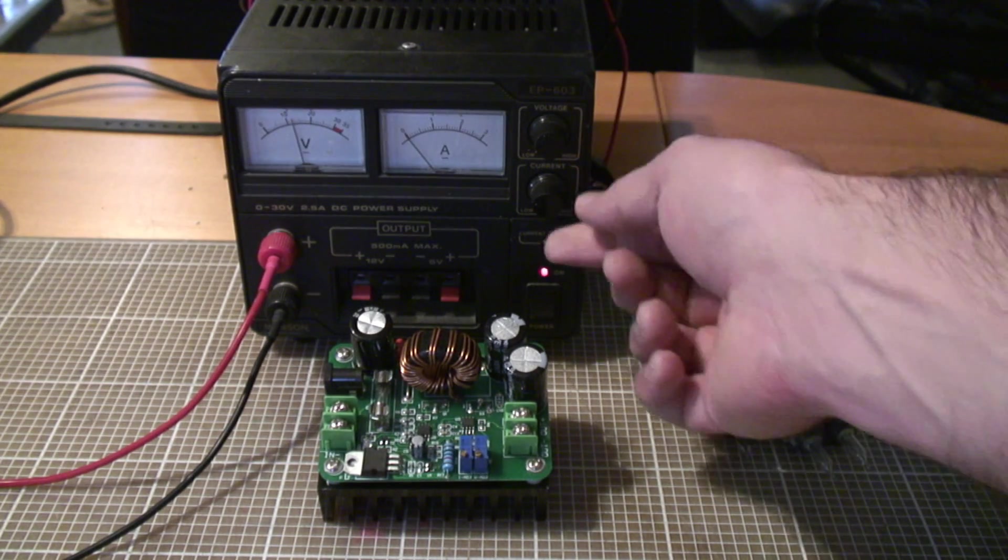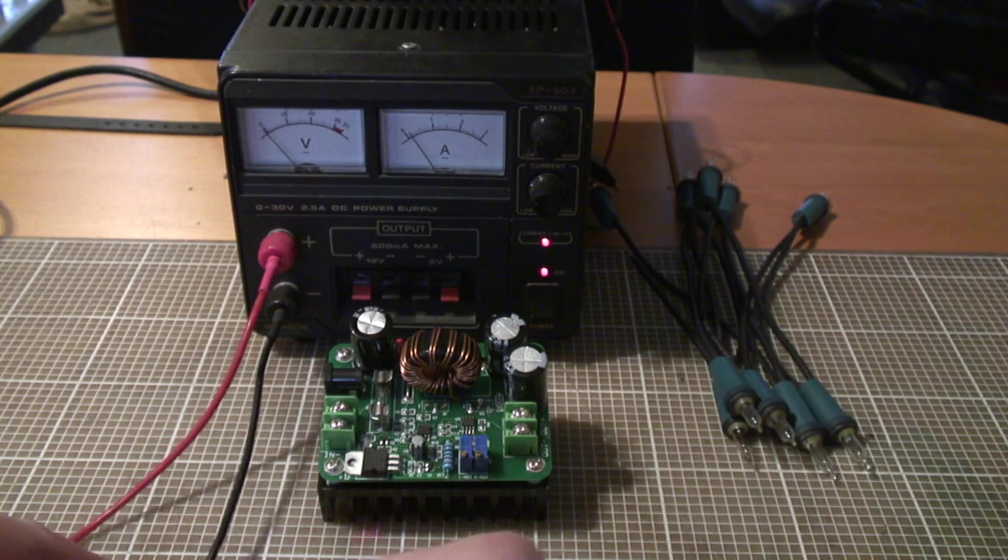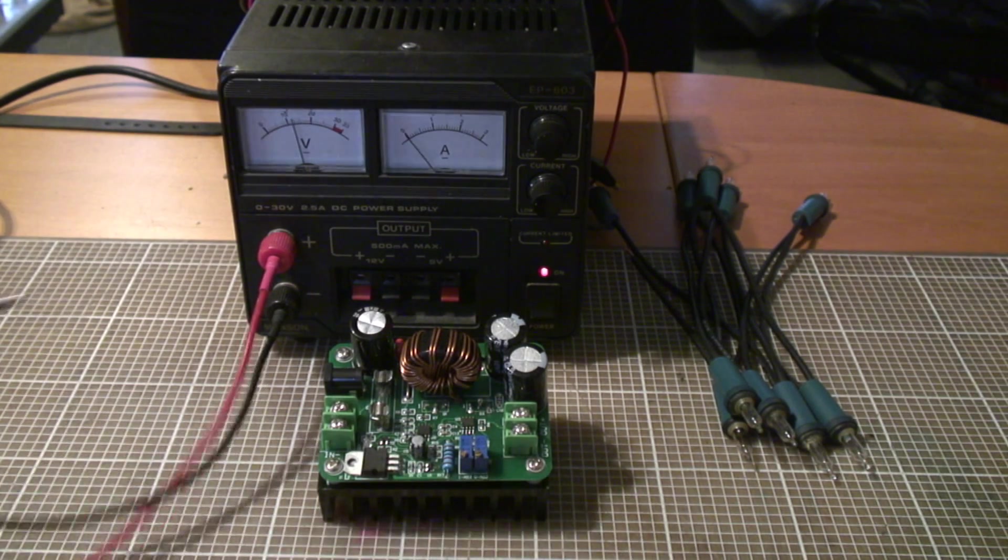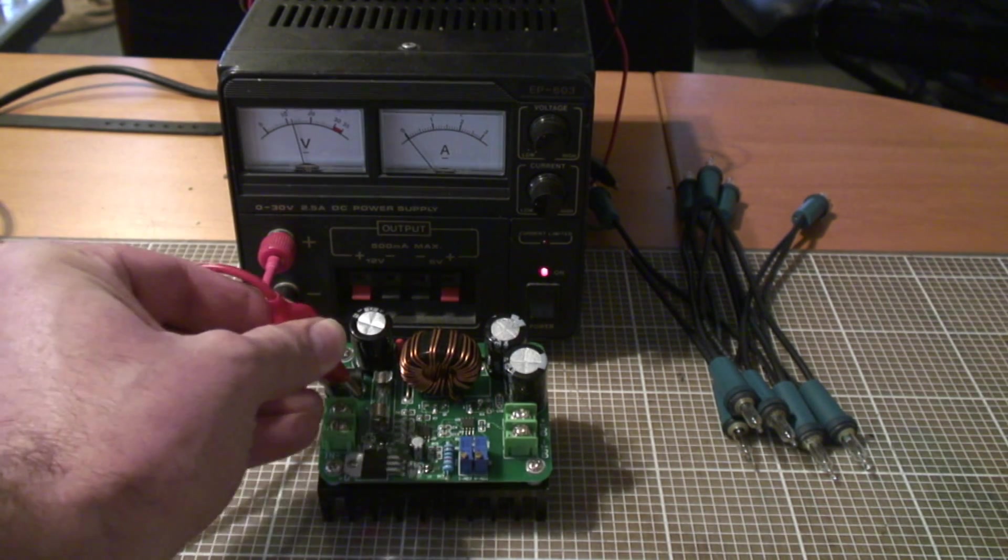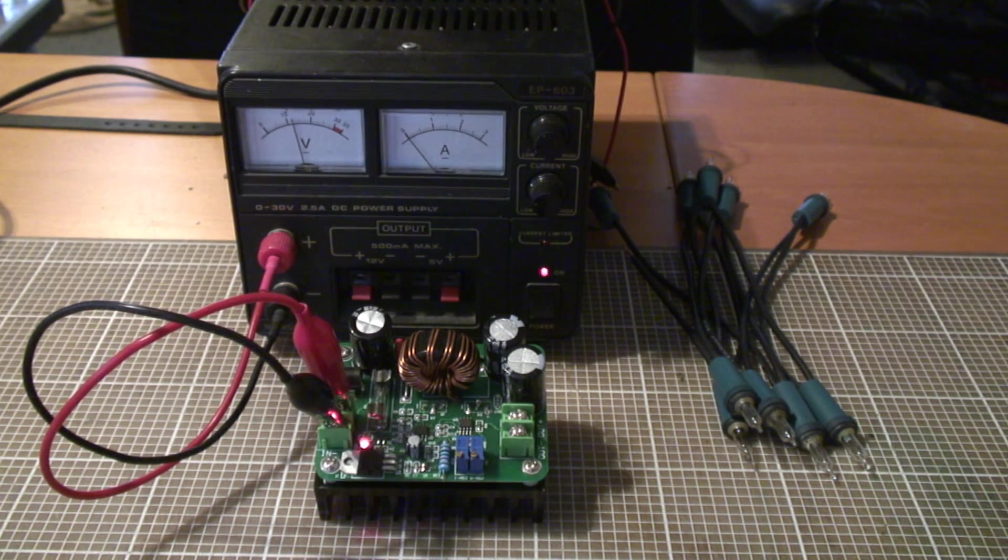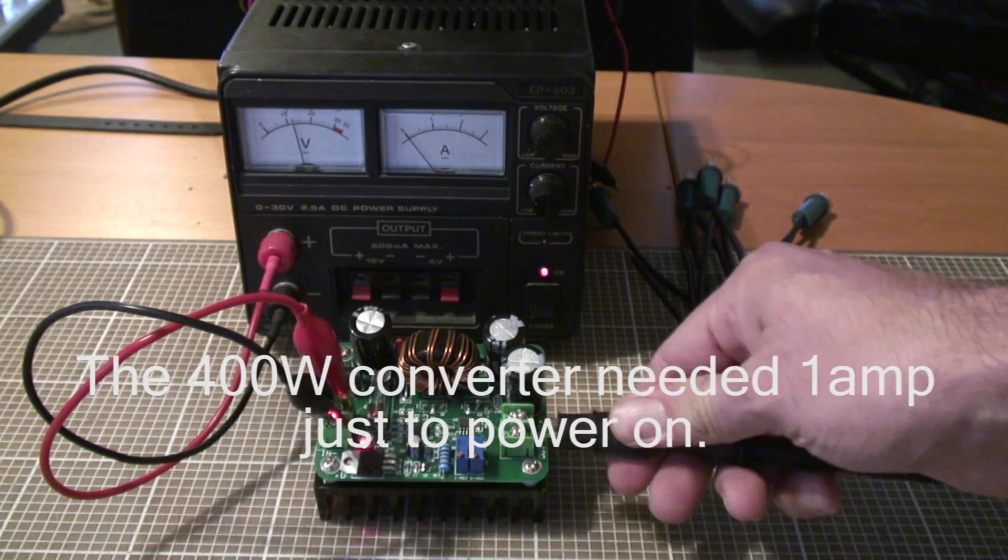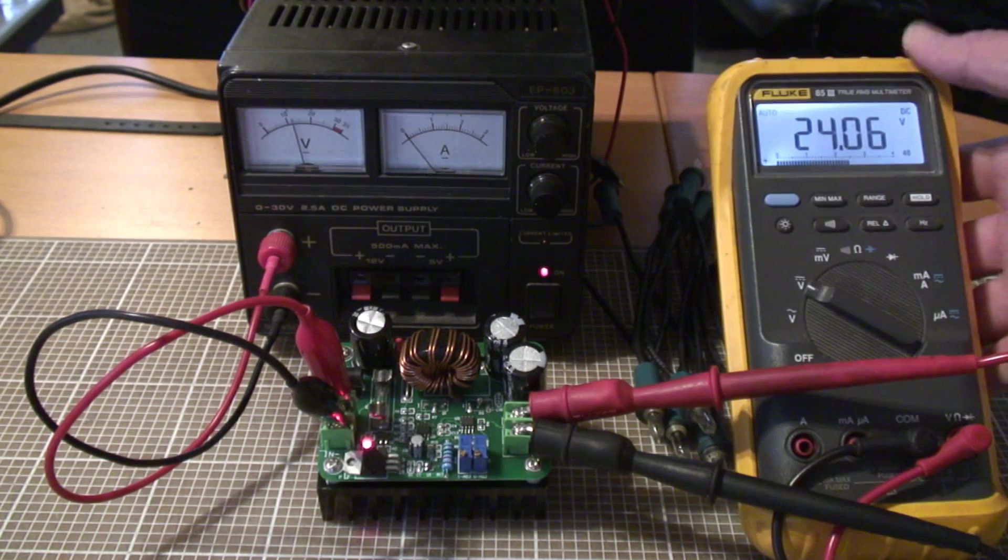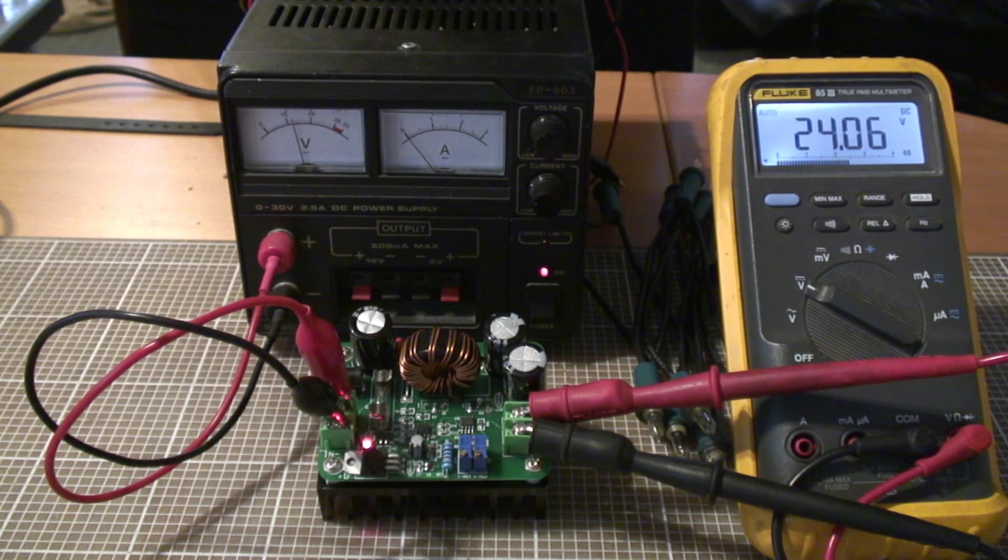As with the last one, we'll start off setting a 100 milliamp limit and we'll see what this one does when it gets some power applied to it. So that seems to have come on. Let's check what we've got going on the output there. And there we are, we've got a nice 24 volts on the output. So that's a good first sign.